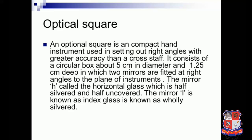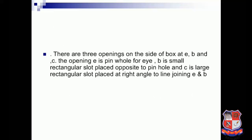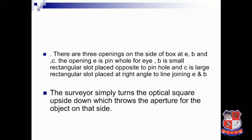The optical square is a compact hand instrument used for setting out right angles with greater accuracy. It consists of a circular box about 5 cm in diameter and 1.25 cm in depth, containing two mirrors fitted at right angles. The horizon glass is half-silvered and half-uncovered; the index glass is wholly silvered. There are three openings: E (a pinhole eye), B (a small rectangular slot opposite the pinhole), and C (a large rectangular slot at right angles to the line). The surveyor turns the optical square until the image of the object on the side is seen through the aperture.